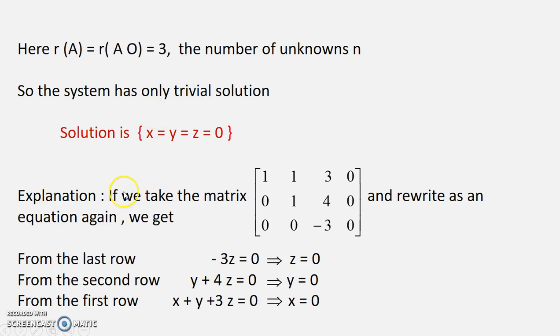Now I will tell you how it is. If we take augmented matrix and write it as an equation again, take the third row. These are coefficient of x and y. This is for z. So we get -3z = 0 which gives you z = 0.